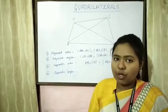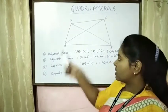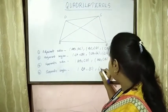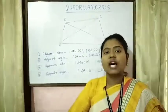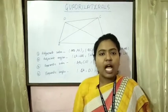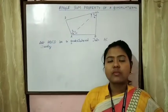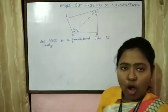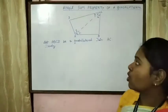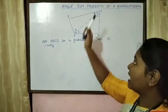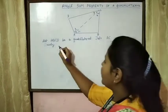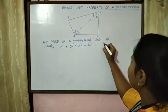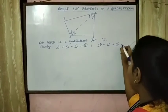There are two pairs of opposite angles: A and C, and B and D. Now we will prove the angle sum property of a quadrilateral. Let ABCD be a quadrilateral; we join diagonal AC. Then angle 1 plus angle 2 equals angle A (equation 1), and angle 3 plus angle 4 equals angle C (equation 2).